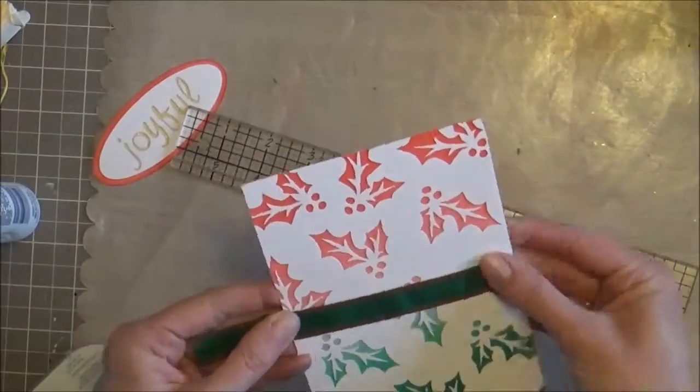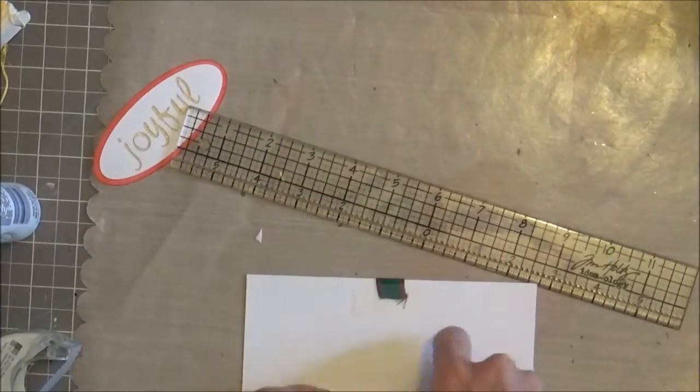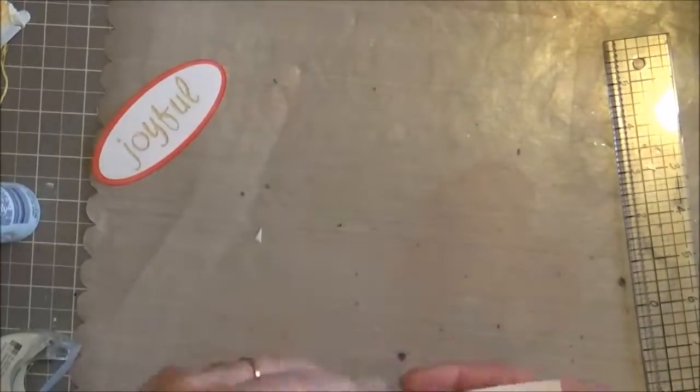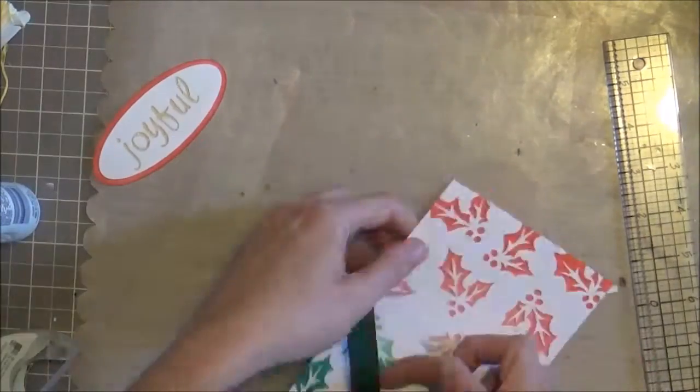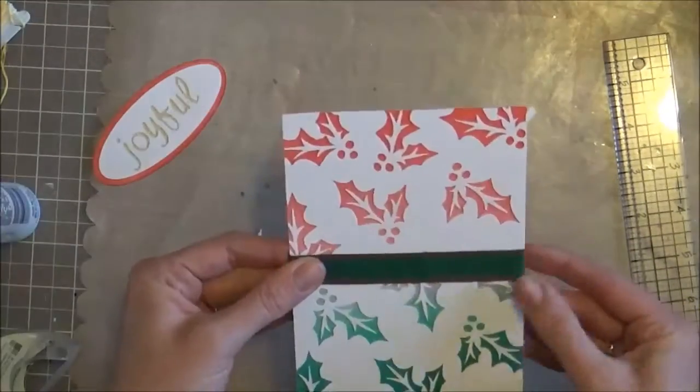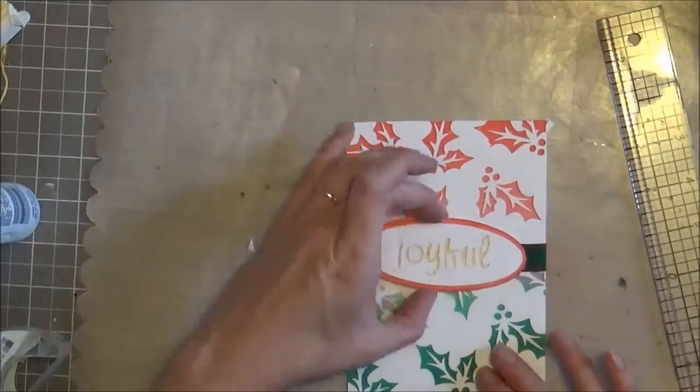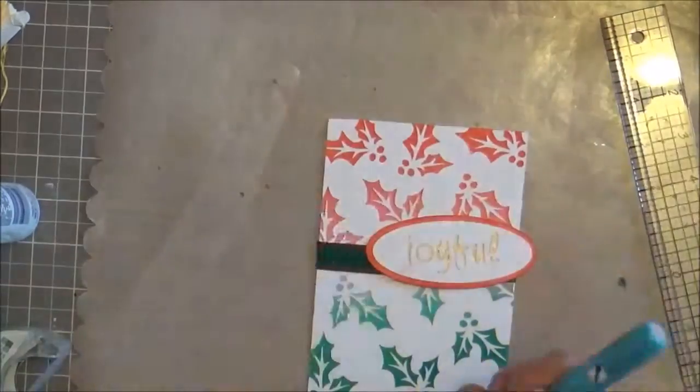Then I'm going to add this green grosgrain ribbon that has a little red trim down each side. This was somebody's extra supply that they gave to me and I'm glad that I had it for this project.